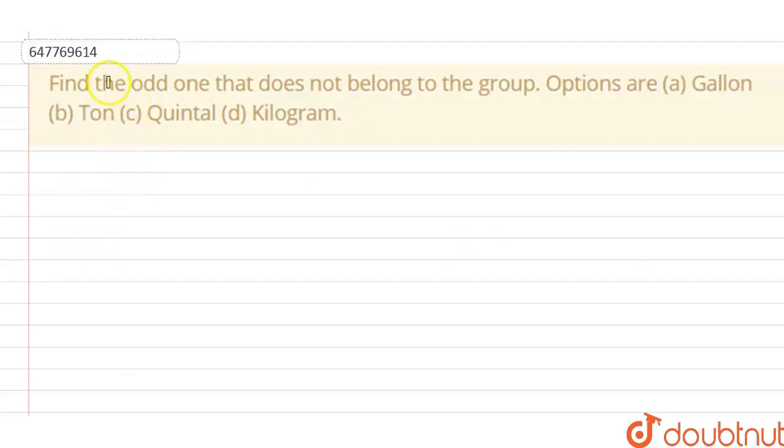Hello students, our question is: find the odd one out that doesn't belong to the group. We have options here. We have a group here. Okay students: gallon, ton, quintal, kilogram.